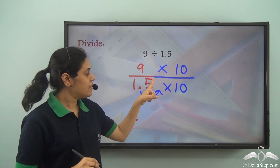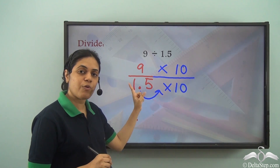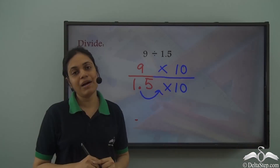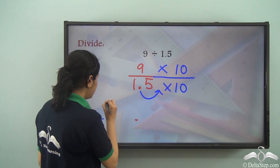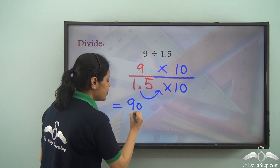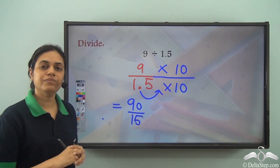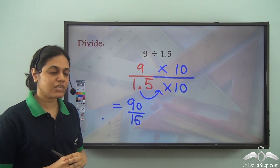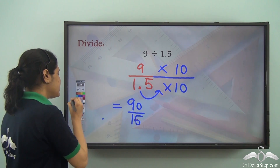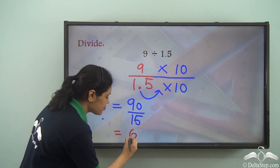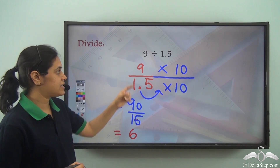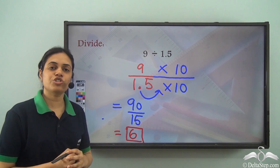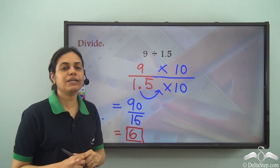Why 10? Because I want to shift the decimal point to the right by one place, and I can only do that by multiplying by 10. So this becomes 90 divided by 15, and this is now a normal division. 90 divided by 15 gives us 6. So the answer is 6 — 9 divided by 1.5 is 6. That is the quotient.